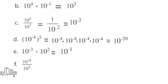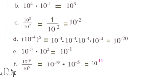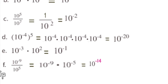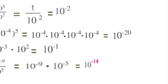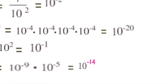Part F: 10 to the power of negative 9 over 10 to the power of 5. Division is equivalent to 10 to the negative 9 times 10 to the negative 5. Adding exponents: negative 9 plus negative 5 equals negative 14. Written as a single power of 10, this is 10 to the power of negative 14.